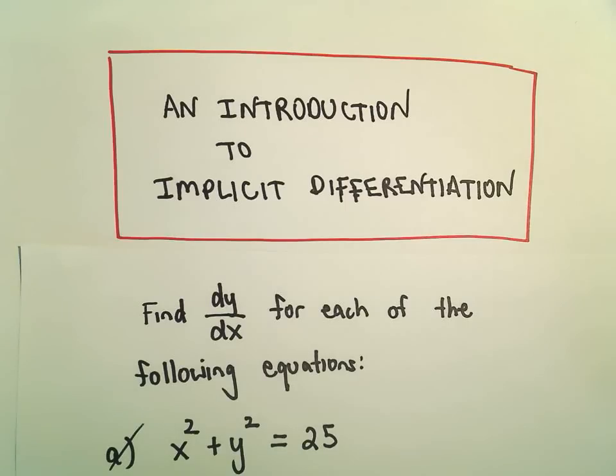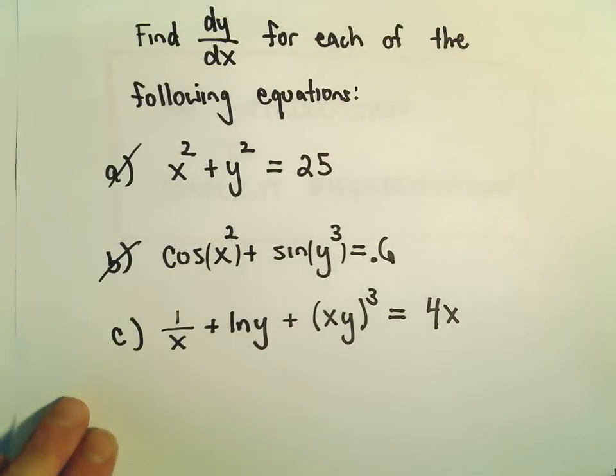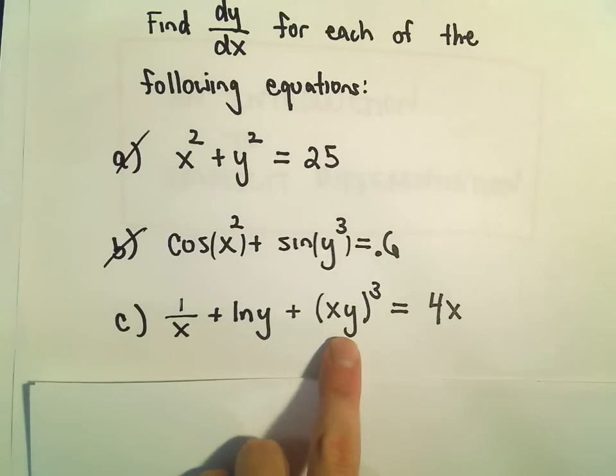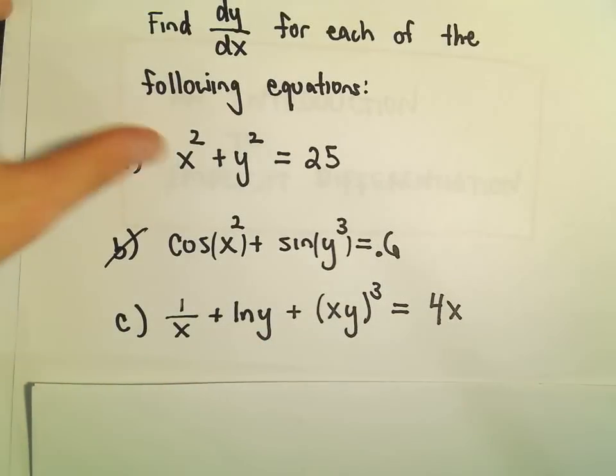Alright, so one more example here using implicit differentiation. We're going to find the derivative of 1 over x plus ln of y plus xy to the third equals 4x.